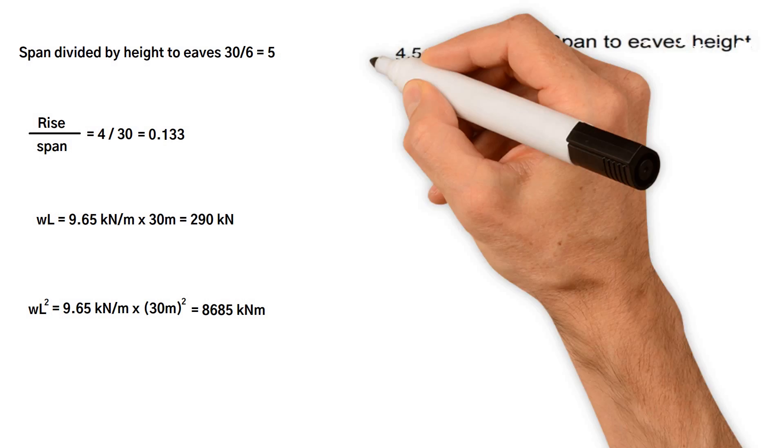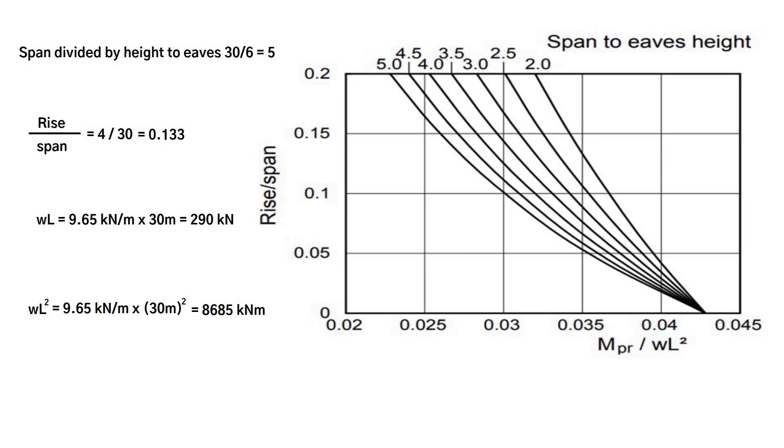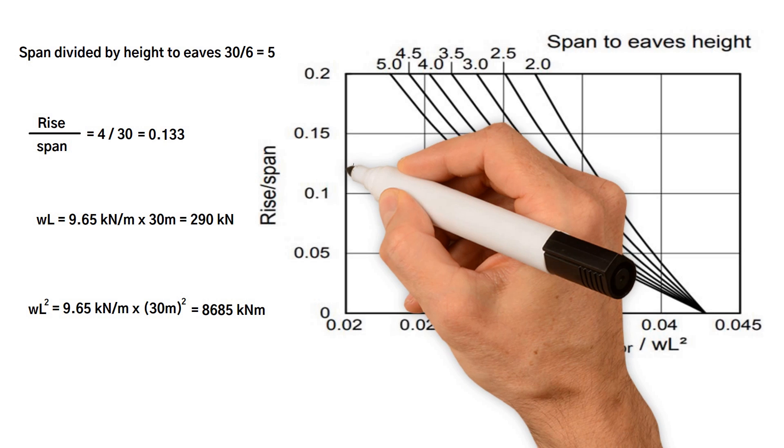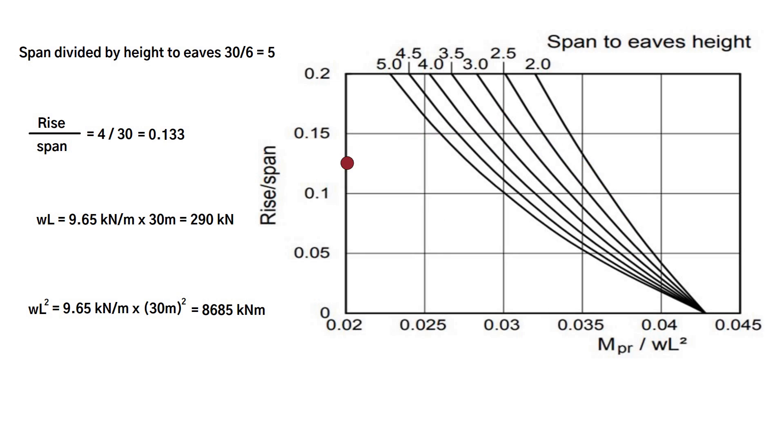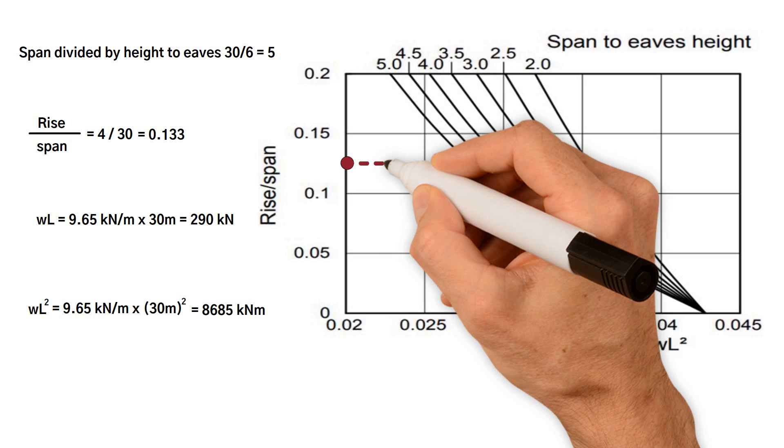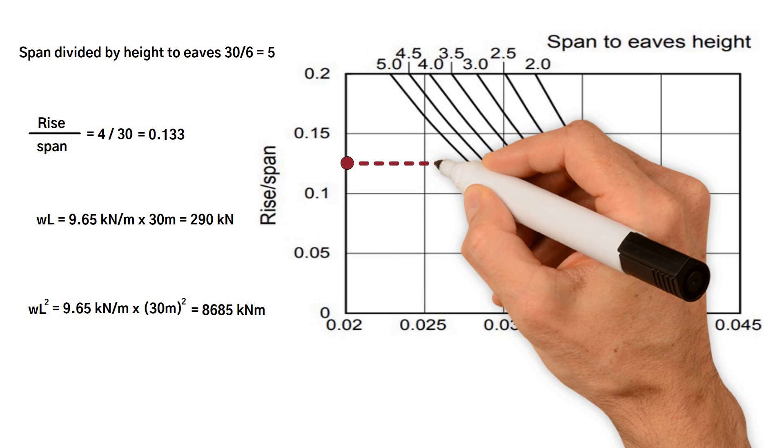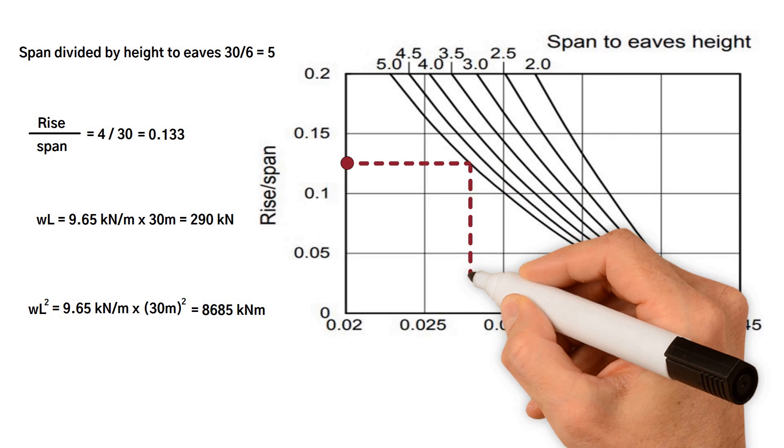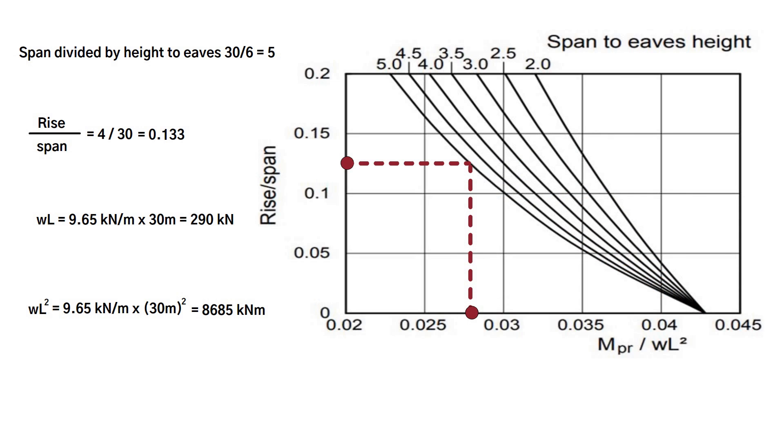From the following graph, we should be able to obtain the required moment capacity of the rafter. Again, we have rise over span 0.133, and span to eaves 5. They should meet here, so we have the ratio MPR over WL squared equals approximately 0.0275. Therefore required moment capacity of rafter equals 0.0275 times WL squared 8,685 kilonewton meter, which equals 240 kilonewton meter.